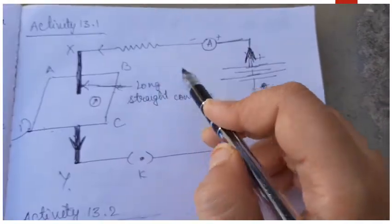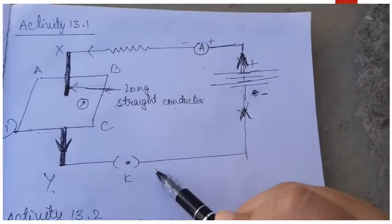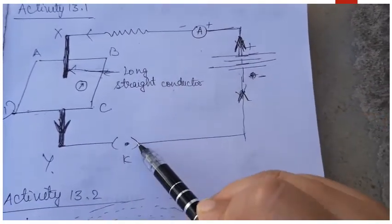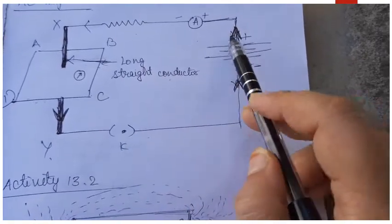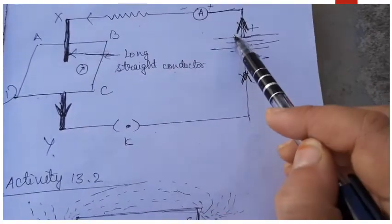Then you connect it to a resistance, ammeter, and a battery and a key. Now when you connect it to a battery and join the key, current will start to flow through it and the direction of current is from the positive terminal of battery to the negative terminal.